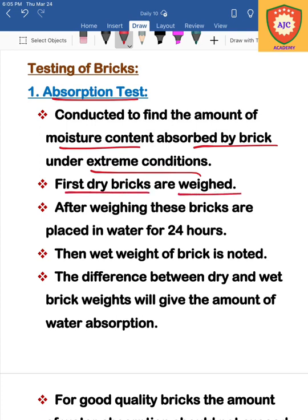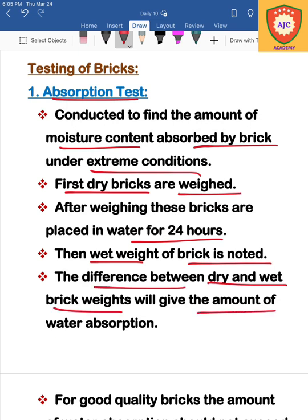First, take a dry brick. Next, dry the brick for 24 hours. Then fill a bucket full of water and immerse the brick in the water. After 24 hours, we will test the weight of the brick — comparing the dry weight versus the wet weight — to determine the amount of water absorption.